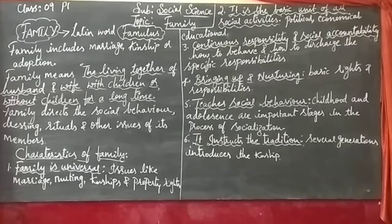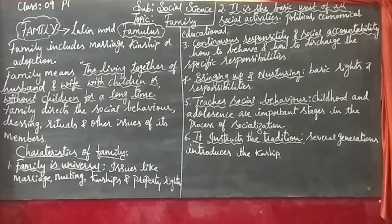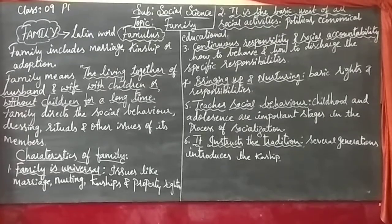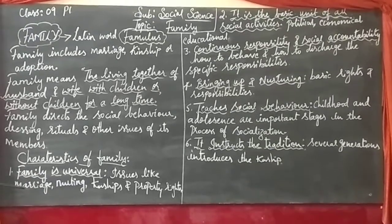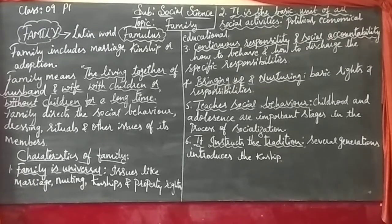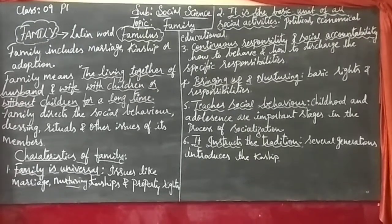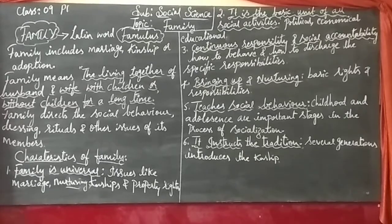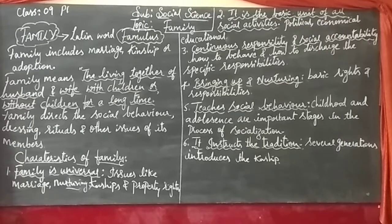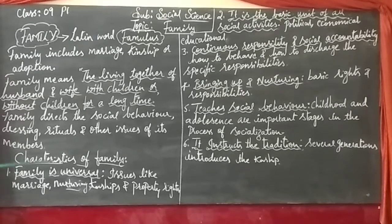Now the first characteristic of family: Family is universal. Family is found in all societies. We have been living in a society — in our neighborhoods — we have seen the family. It is considered as found in all societies. Family follows some fixed patterns in issues like marriage, nurturing, kinship, and property rights. Generally the members belong only to that particular family — outsiders are not part of it.